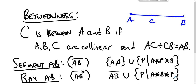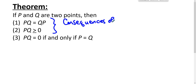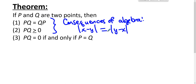Draw yourself a few pictures to make sense of that. Now, if P and Q are two points, then: the distance from P to Q equals the distance from Q to P; the distance from P to Q is a non-negative number; and the distance from P to Q is zero if and only if P equals Q. The first two follow easily from algebra — the distance from P to Q is the absolute value of x minus y, and the distance from Q to P is the absolute value of y minus x, and those two are the same.